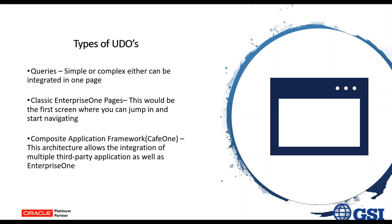The next type of UDO would be EnterOne Pages — your starting page for the user if you want to give them exactly what they need and nothing they don't. You can create a portal page for them; they jump in and all the buttons are there just for what they need. Lastly, you can use the composite application framework, CAFE One, which lets you plug into external programs. For example, if you run an outdoor shop, weather monitoring — like hurricanes here in Florida — could be right on your desktop. These UDOs are very customizable and very powerful.